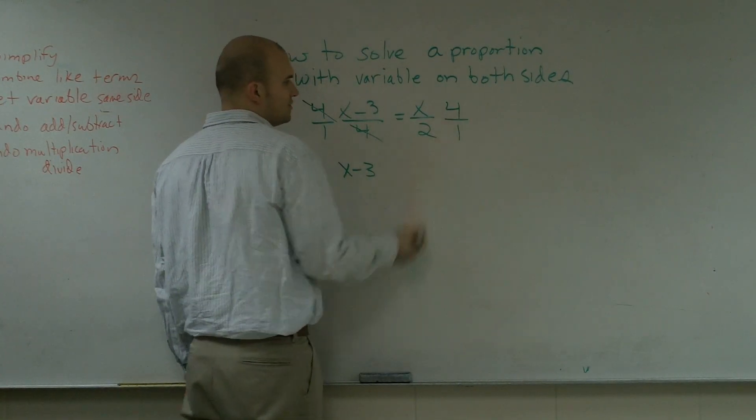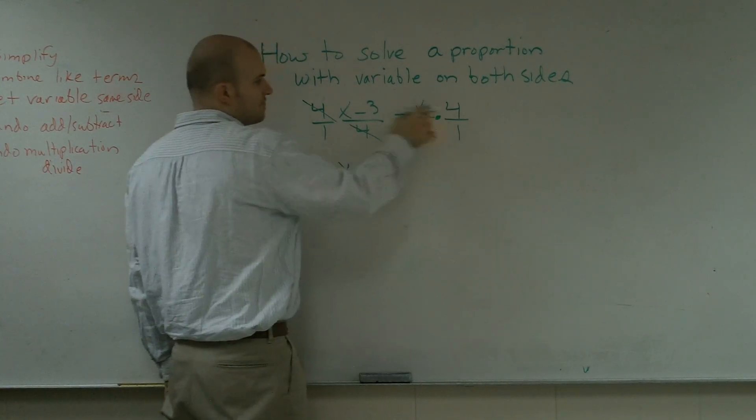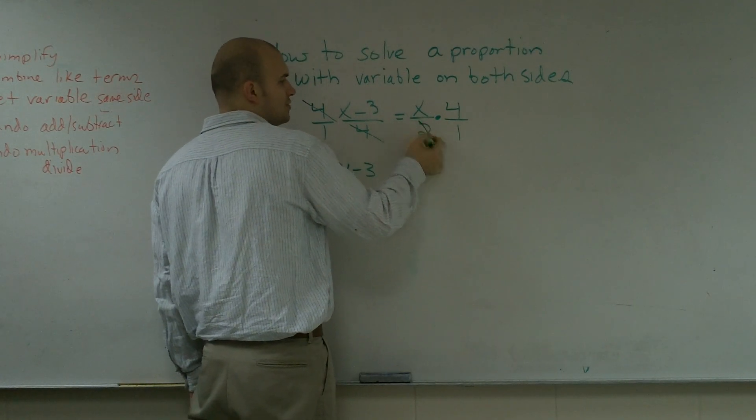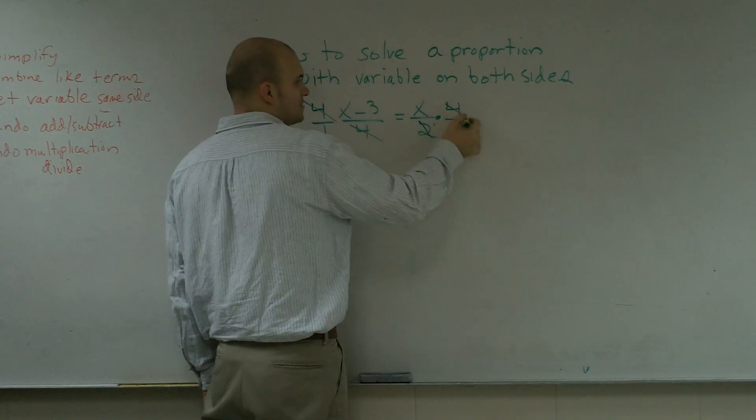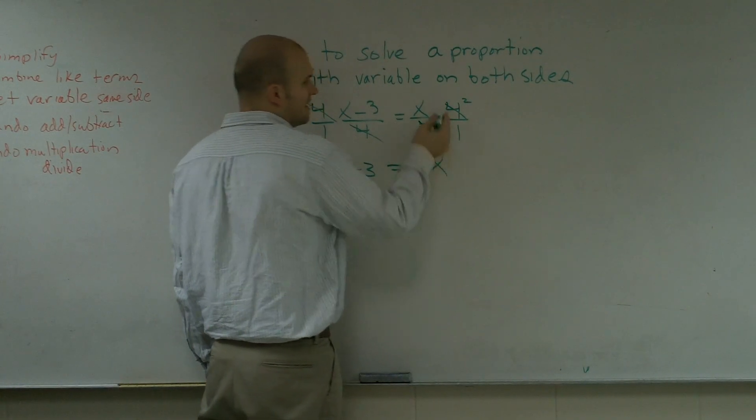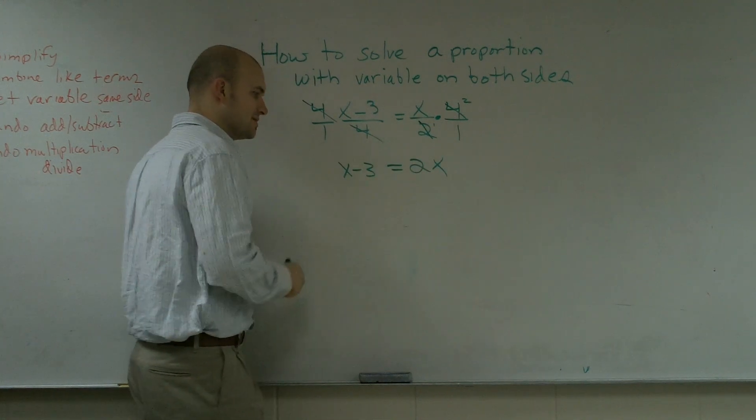Now, you could write this as four times x divided by two, or you could say, well, two goes into two one time, and two goes into four two times. So it becomes equal to 2x, and then 2x divided by one is always going to be 2x.